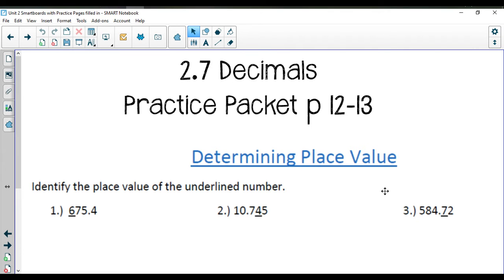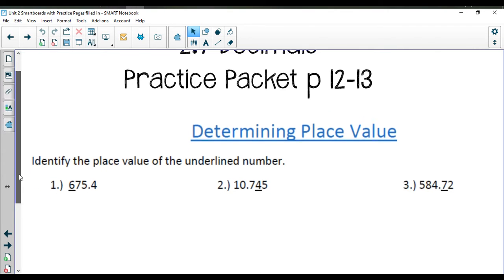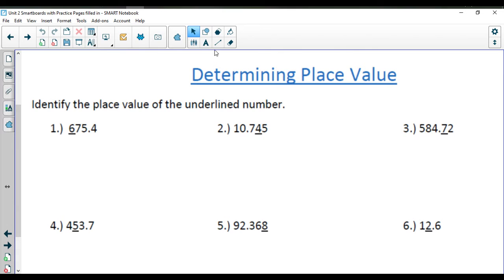We're going to start off with the section determining place value. So we're identifying the place value of the underlined number. So in this first example, our underlined number is the 6, and it is located in the 100s place because it's 600.